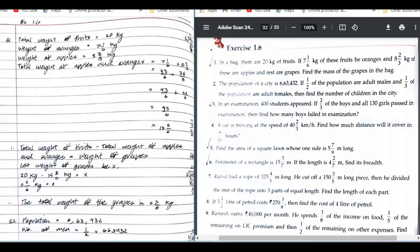So the first question is: in a bag there are 20 kg of fruit. Yes, question number one. So there are 20 kg of fruit, and seven and a half kg of these fruits are oranges.